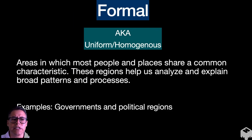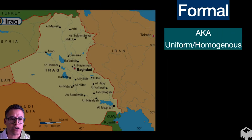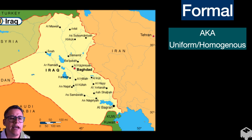So let's talk about formal regions specifically. These are areas in which most people and places have a common characteristic. So these regions help us analyze and they help us explain broad patterns and processes in a place. So examples of these could be governments and political regions. So let's take a look at one. So here's the country of Iraq. And within that red boundary line is the government of Iraq. So the governmental policies, the governmental rules, they all extend into each one of those parts of Iraq. So because it has a clearly defined boundary, we call this a uniform or homogenous or a formal region. And so in your brain, you should think of the word uniform and you should think of the fact that it's the same in every part of that area. So that's why it's a formal region.